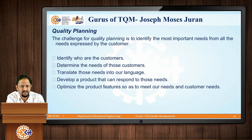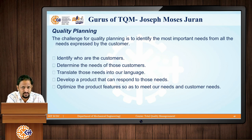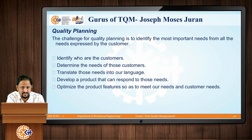The first concept in Juran's trilogy is quality planning. The basic challenge here is to identify the most important needs from all the needs expressed by the customer. Any organization is built for its customers, so it is the prime responsibility of any organization to find out the basic needs of customers. The first step in quality planning is identifying who the customers are. For example, in the mobile segment in the Indian context, customers may be students, working professionals, or elderly people.